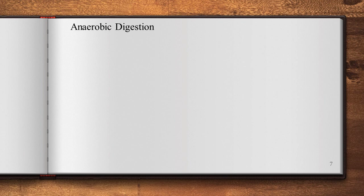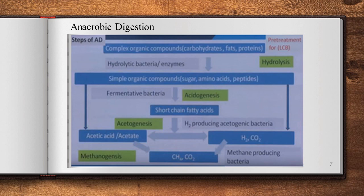Anaerobic digestion is the main stage. The steps include hydrolysis, acetogenesis, and methanogenesis. Hydrolysis involves complex organic compounds broken down by hydrolytic bacteria with enzymes into sugars, amino acids, and peptides. The second process, acetogenesis, further processes amino acids and peptides.